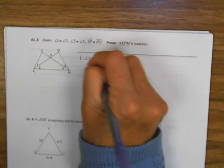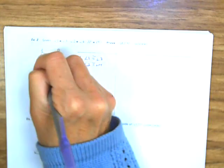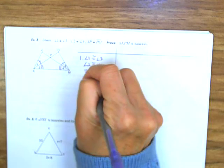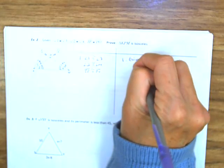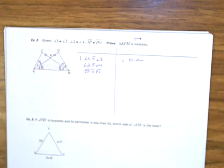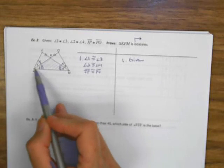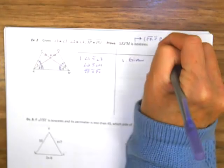Now let's look at a proof. We are given that angle 1 is congruent to angle 3, angle 2 is congruent to angle 4 — be sure to use different markings — and JP is congruent to PO (those top two little segments). We want to prove that triangle KPM is isosceles. By definition, isosceles requires two congruent sides, so we need to show PK is congruent to PM.